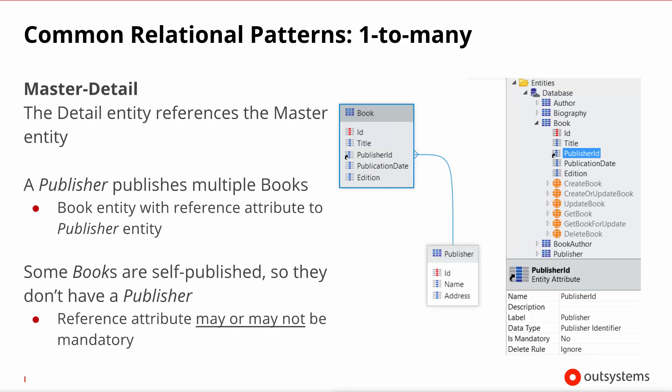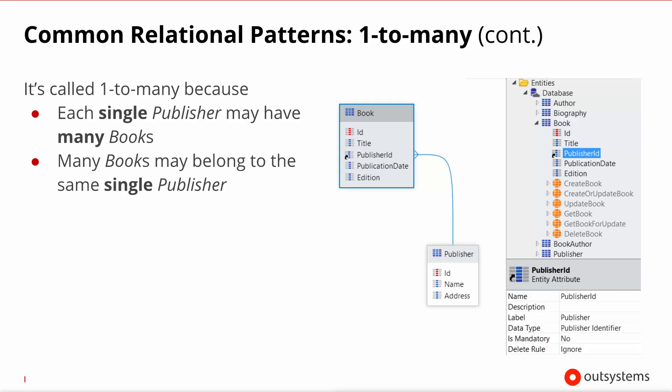The second and most common pattern is the master-detail pattern. In this case, the detail entity references the master entity. In our example, a publisher publishes multiple books, so each book has a publisher ID referencing who is the publisher for that book. If certain books may not have a publisher — for example, they might be self-published — you might not want to enforce this as mandatory, allowing books to be created by leaving the publisher ID as a null identifier. This one-to-many pattern is called so because each publisher may have many books, and multiple books may belong to a single publisher.